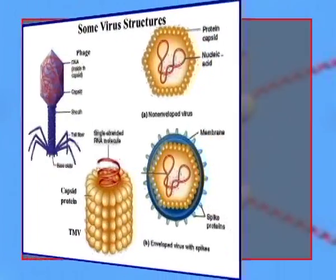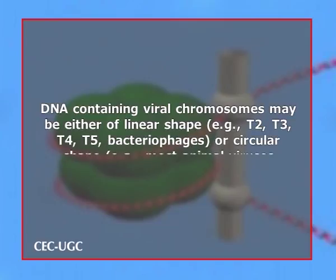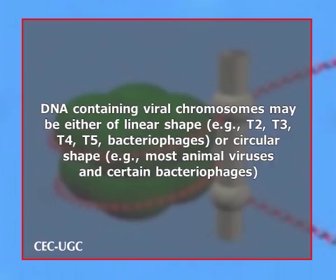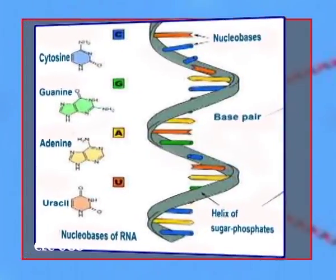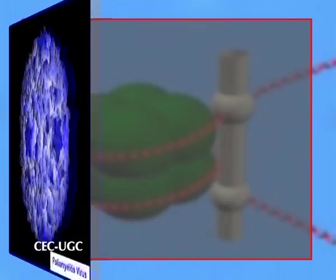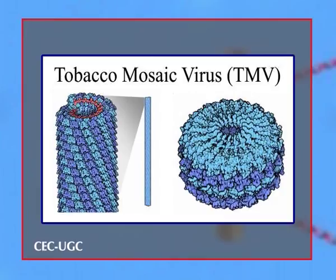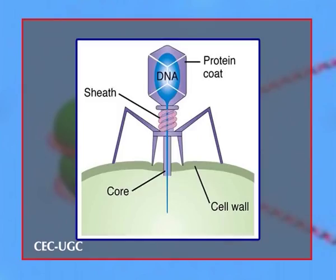The chromosomes of viruses are called viral chromosomes. They occur singularly in a viral species and chemically may contain either DNA or RNA. The DNA-containing viral chromosomes may be either linear — e.g., T2, T3, T4, T5 bacteriophages — or circular in shape, e.g., most animal viruses and certain bacteriophages. The RNA-containing viral chromosomes are composed of linear single-stranded RNA molecules and occur in some animal viruses, e.g., poliomyelitis virus, influenza virus, most plant viruses such as tobacco mosaic virus (TMV), and some bacteriophages. Both types of viral chromosomes are either tightly packed within the capsids of mature virus particles (virions) or occur freely inside the whole cell.